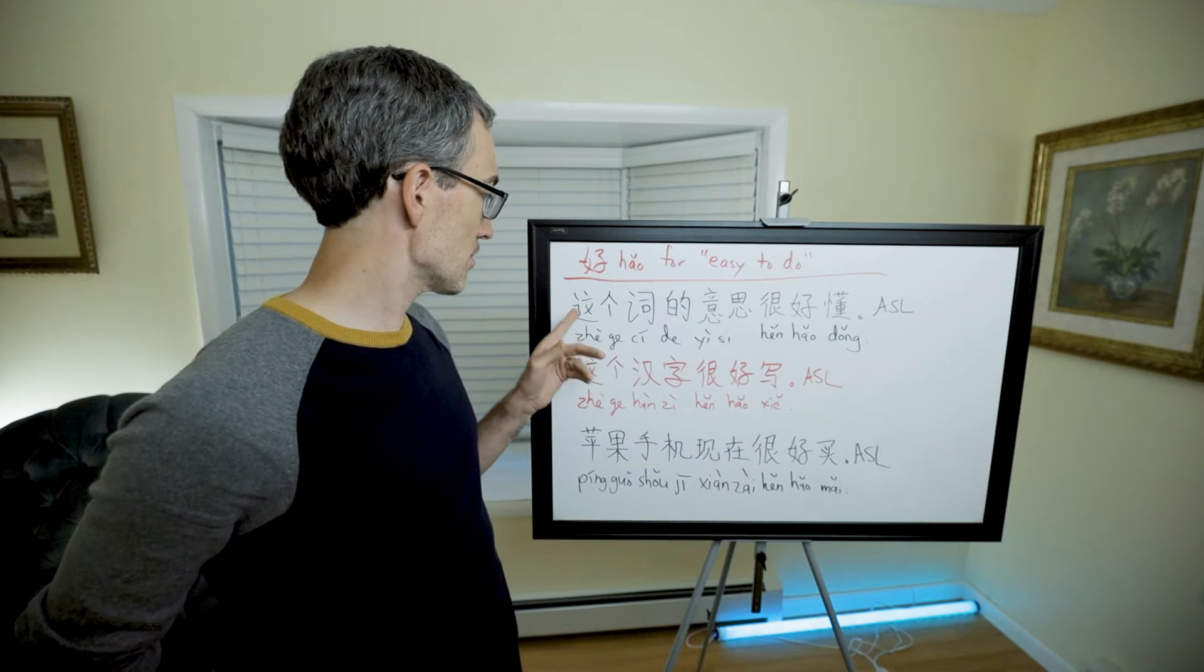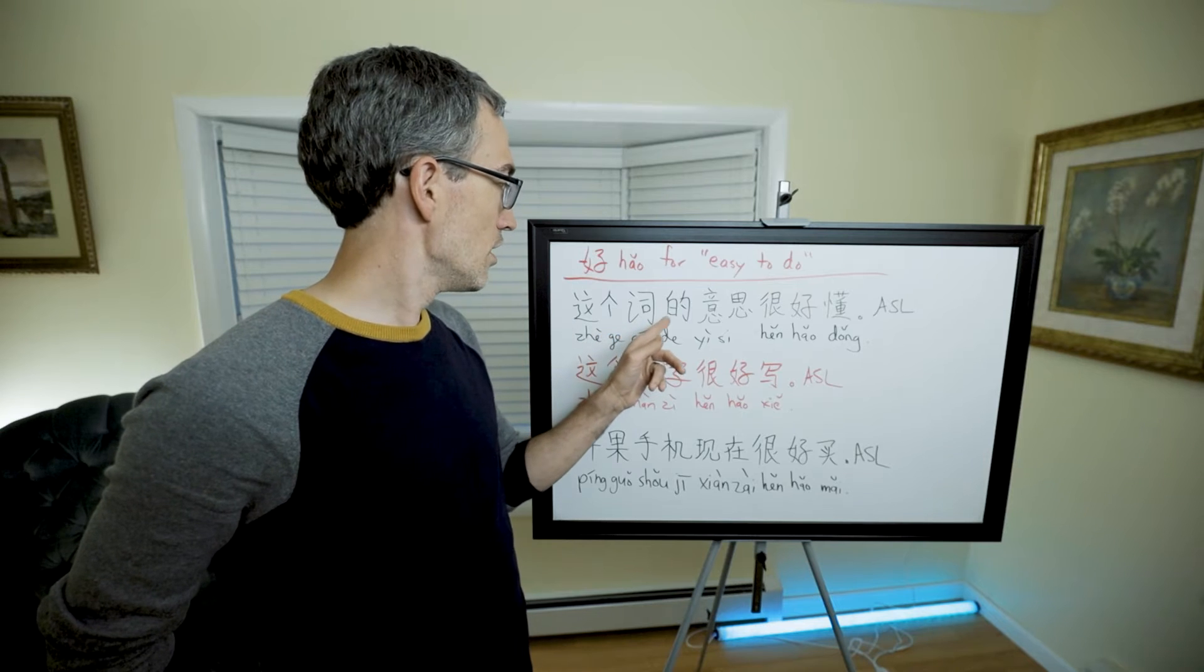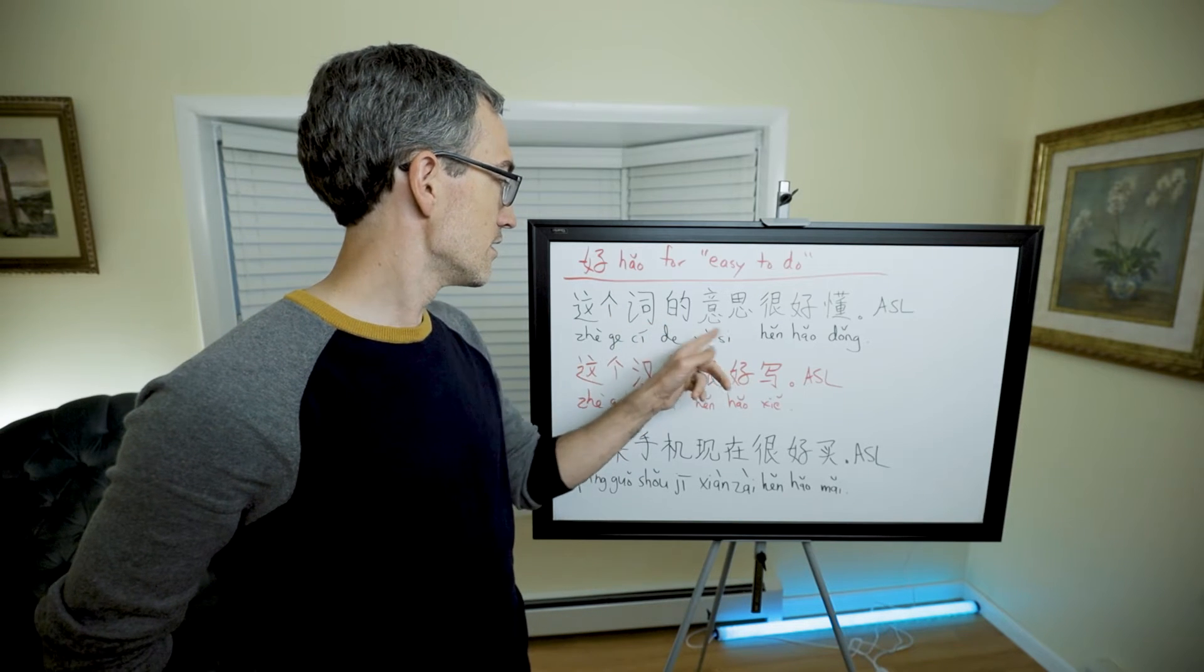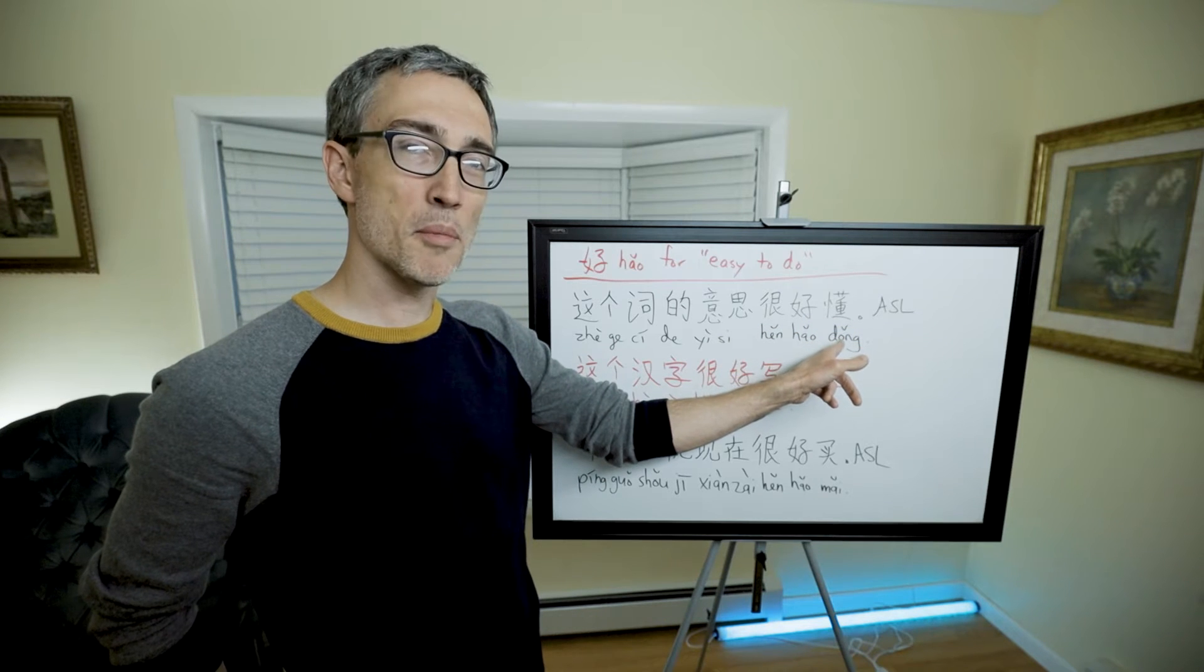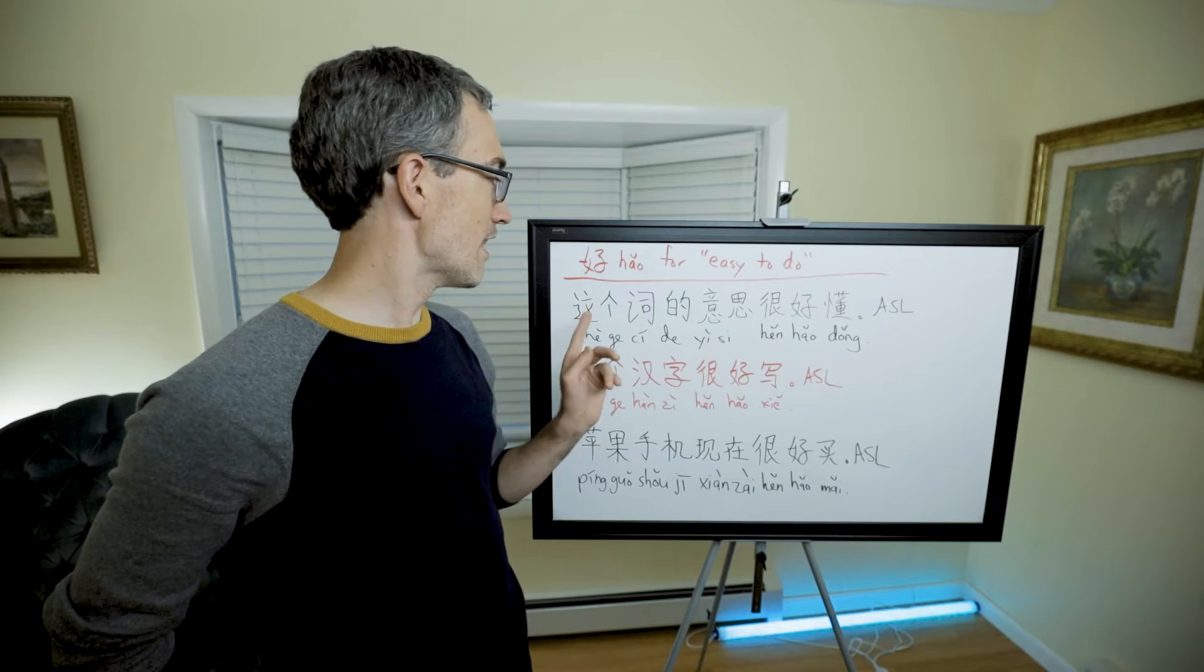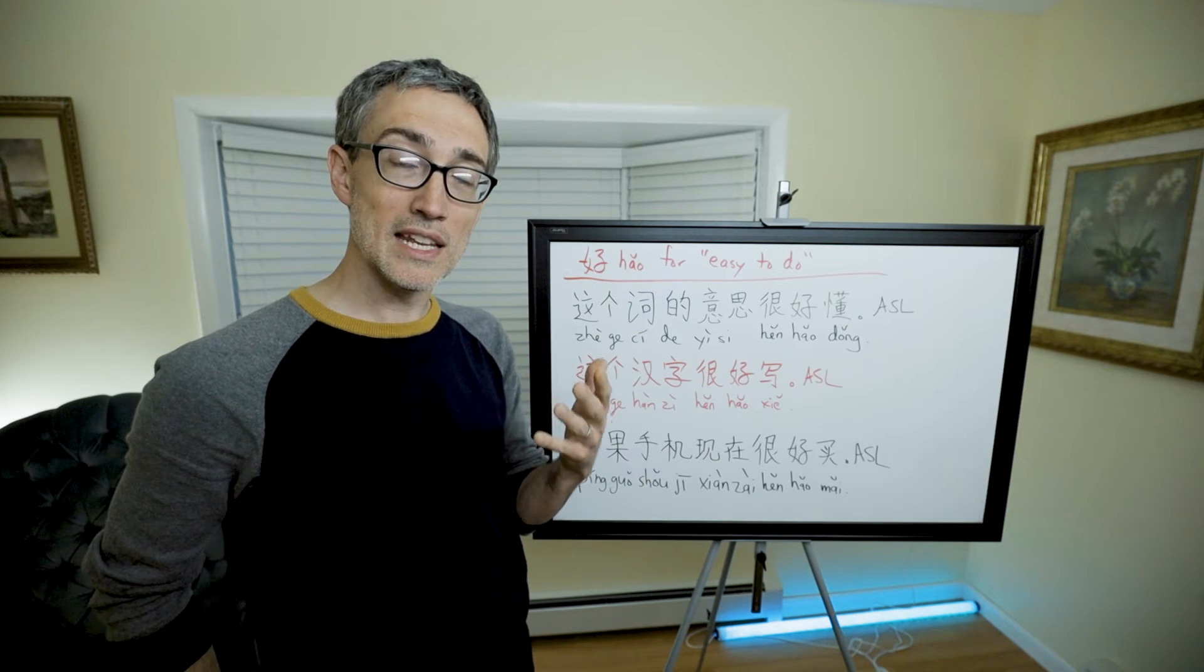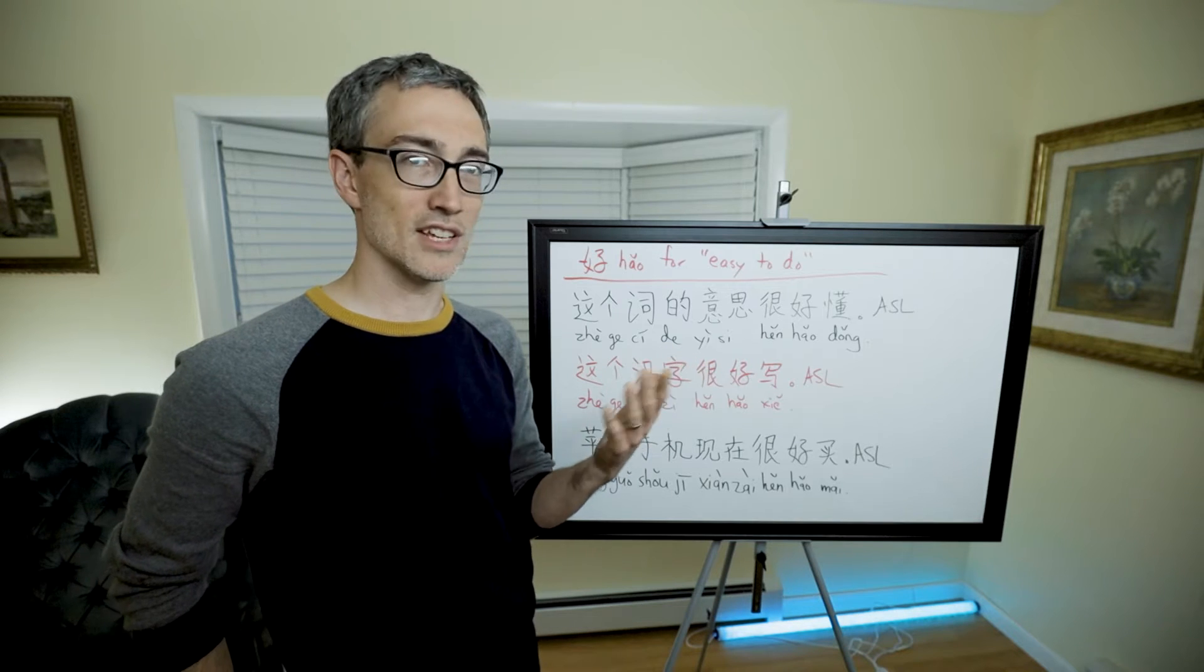Let me give you a couple examples. 这个词的意思很好懂. 懂 means to understand, so that means this word's meaning is very easy to understand, or it's very easy to understand this word's meaning.